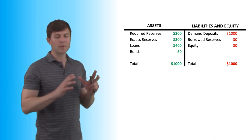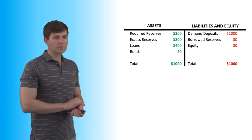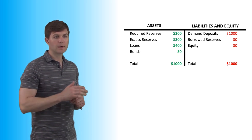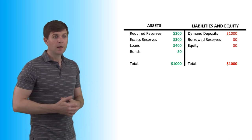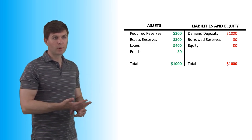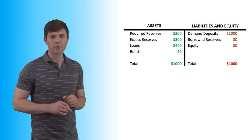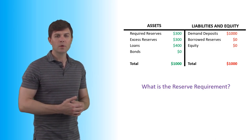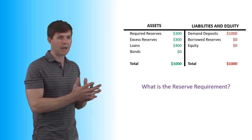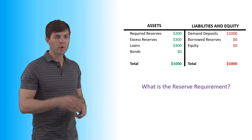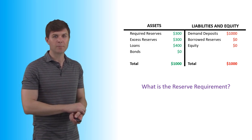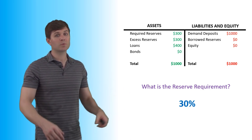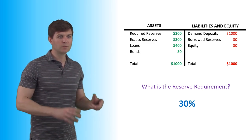Let's look at a few examples. In this first model we have a total of $1,000 on each side: demand deposits of $1,000 on the liability side; and on the asset side, required reserves of $300, excess reserves of $300, and loans of $400. The question here is: what is the reserve requirement? We have $300 in required reserves and $1,000 in demand deposits, so the reserve requirement is 30%. This is the type of calculation you might see on an FRQ.